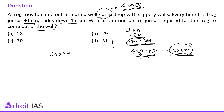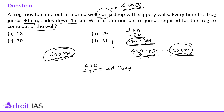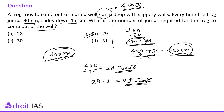For 420 cm, we divide 420 by 15, which gives 28 jumps. So 28 jumps are required to reach 420 cm, and after that one more jump is required to reach the top. So 28 plus 1 equals 29 jumps. The answer is 29 jumps.